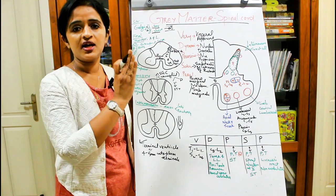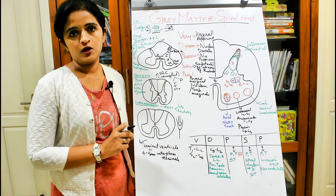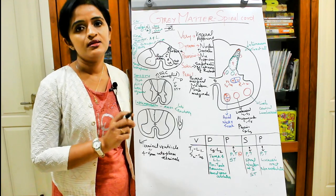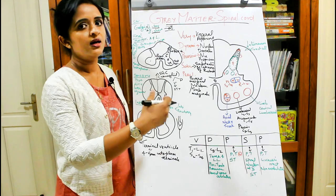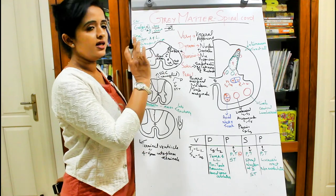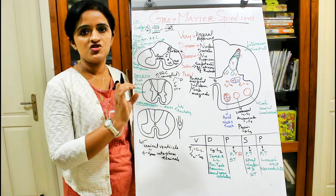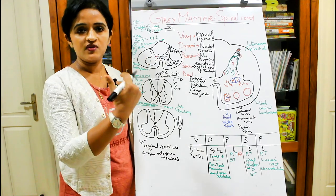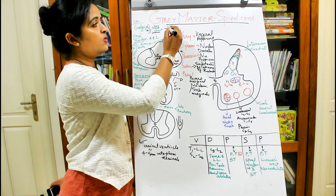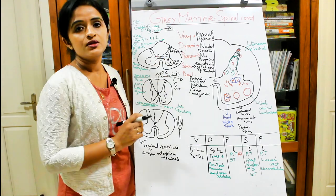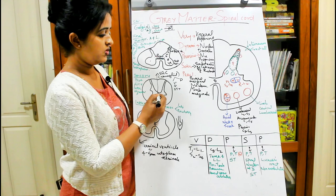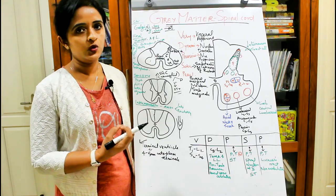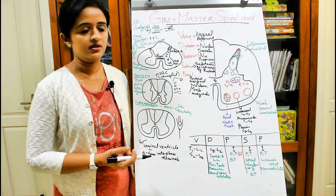The gray commissure, divided by the central canal into ventral and dorsal portions, can also be called the substantia gelatinosa centralis — I call it 'centralis' to distinguish it from another substantia gelatinosa we will see later. An important point: it is through the ventral portion of the gray commissure that the spinothalamic tract crosses. We will discuss the details of this crossing when we cover the white matter.